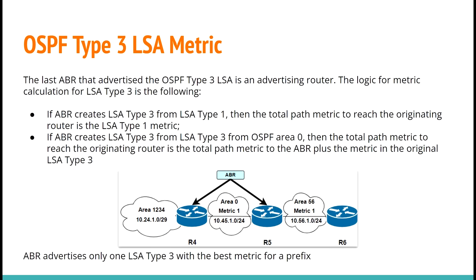So how does the OSPF Type 3 LSA metric get created? If an ABR creates LSA Type 3 from LSA Type 1, then the total path metric to reach the originating router is the Type 1 LSA metric. For example, R6 creates LSA Type 1 for area 56 with metric 1. R5, based on this Type 1, creates LSA Type 3 and the total path metric for this Type 3 LSA is going to be metric 1 from the original Type 1 LSA. If an ABR creates LSA Type 3 from LSA Type 3 received from OSPF area 0, then the total path metric to reach the originating router is the total path metric to the ABR plus the metric in the original LSA Type 3.